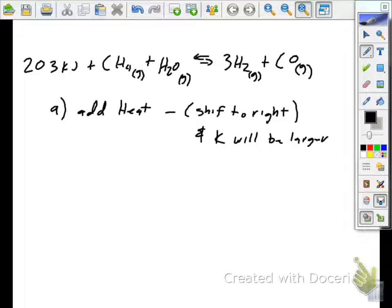More product's going to be made, right? So, as we add more and more heat, more product is going to be made. So, that's shifting it how? To the right. In this one, it's going to shift to the right, and the K will become larger.